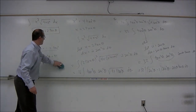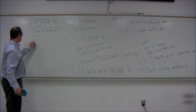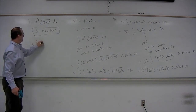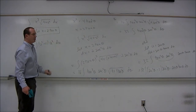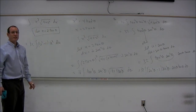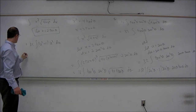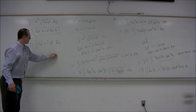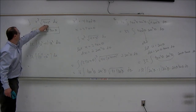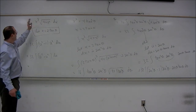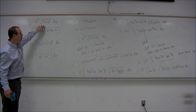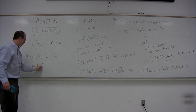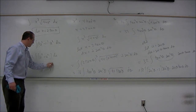Now a u substitution will work. With u equal to secant theta, the integrand becomes: 32 integral of u squared minus one times u squared du — a nice polynomial integral in u. Simplifying, this is u to the fourth minus u squared. Now we can finally integrate: u to the fifth over five minus u to the third over three plus C.